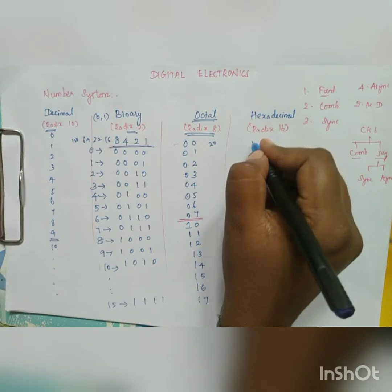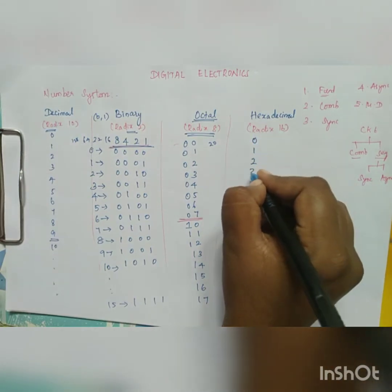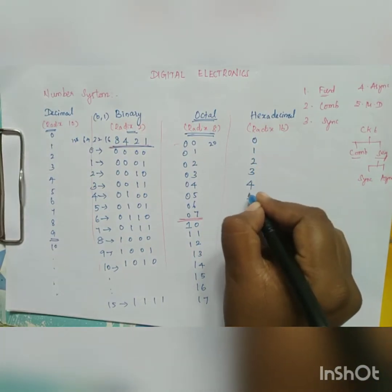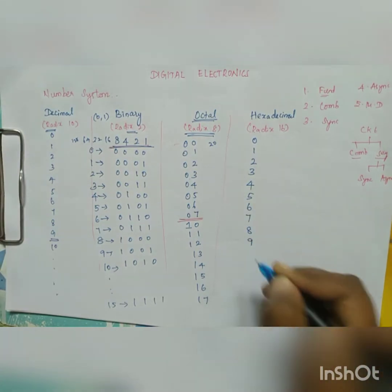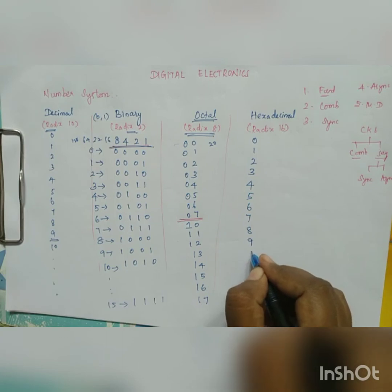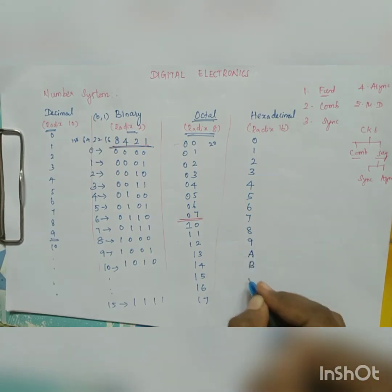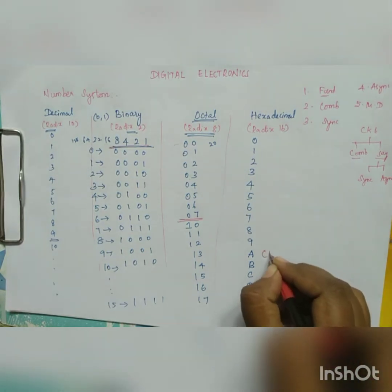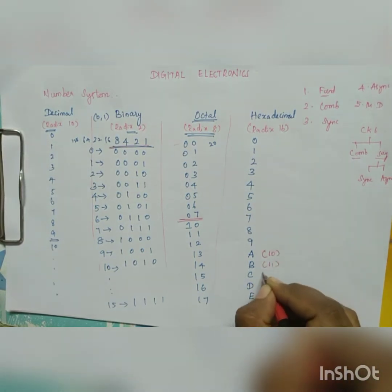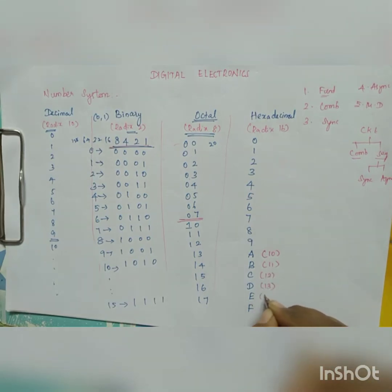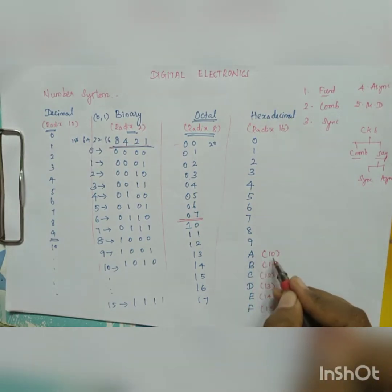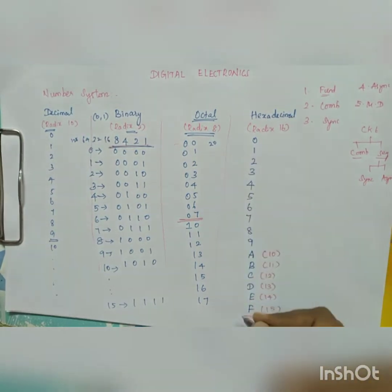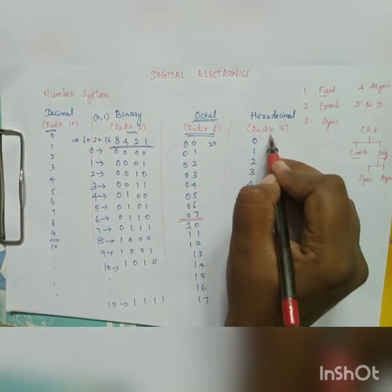For hexadecimal, the digits are 0, 1, 2, 3, 4, 5, 6, 7, 8, 9. After 9, decimal 10 is represented as A, then B, C, D, E, F. So A represents 10, B is 11, C is 12, D is 13, E is 14, and F is 15. From 0 to F there are 16 values, that's why the radix or base is 16.